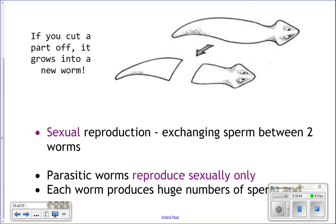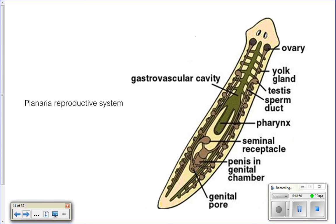In sexual reproduction, planarians are simultaneous hermaphrodites with ovaries toward the head and testes toward the back. They exchange sperm with each other, use that sperm to fertilize their own eggs, and then release those fertilized eggs.